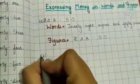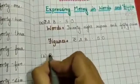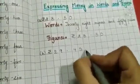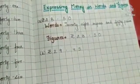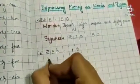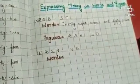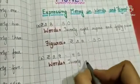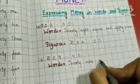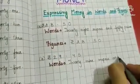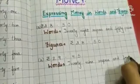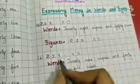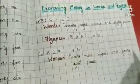Now, B. If we have to write rupees 29 and 45 paise, in words we write it as 29 rupees and 45 paise.